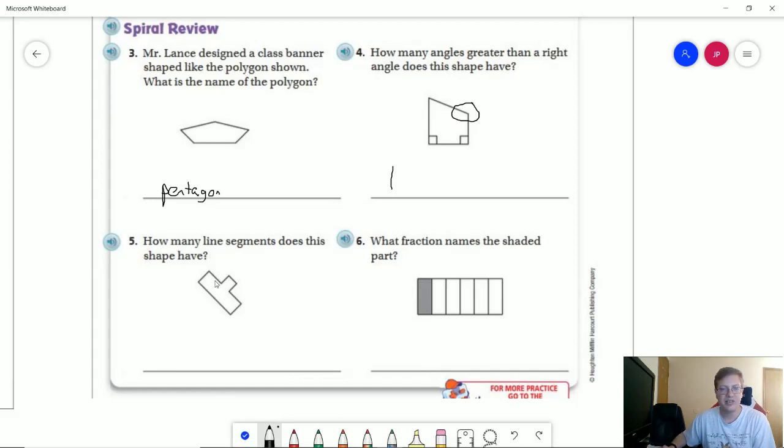For number five, how many line segments does the shape have? So starting from this corner, I'm going to count one, two, three, four, five, six, seven, eight.